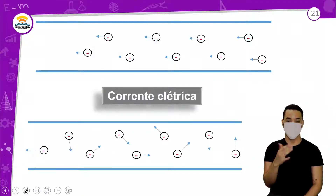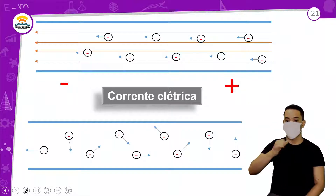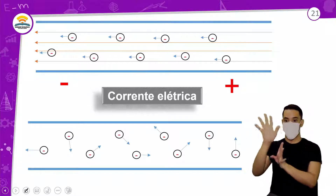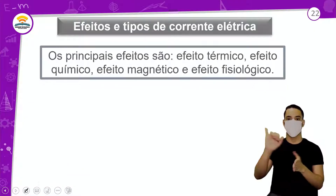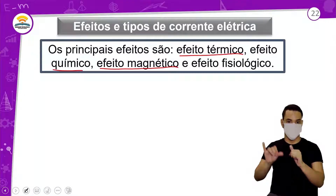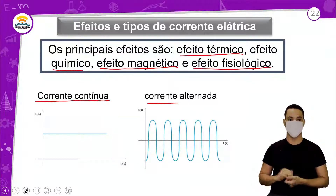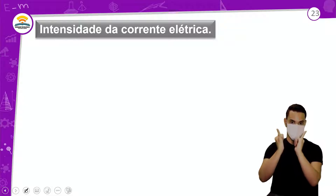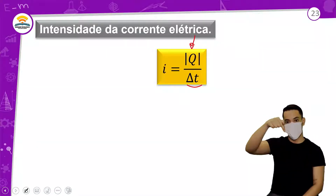Corrente elétrica: se eu criar uma diferença de potencial e gerar um campo elétrico, esse campo vai ordenar as cargas — que estavam se movendo de forma desordenada em todas as direções — e elas vão se mover em uma direção. Os principais efeitos são: efeito térmico (aquecimento), efeito químico, efeito magnético e efeito fisiológico. O magnético gera um campo magnético; o fisiológico é o choque no ser humano. Existe corrente contínua (baterias) e corrente alternada (que vem da usina hidrelétrica até a tomada). A corrente elétrica é dividir o módulo da carga pelo tempo: quantas cargas passam em determinado tempo.